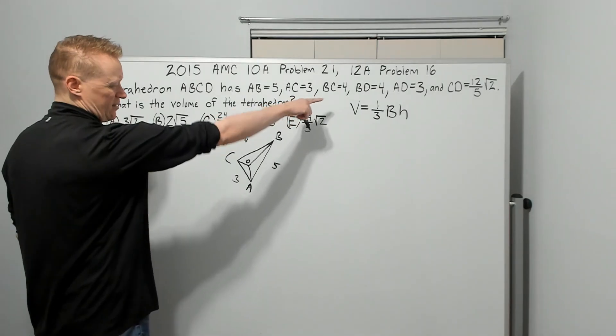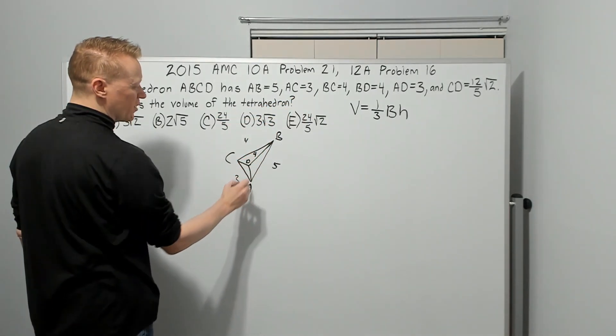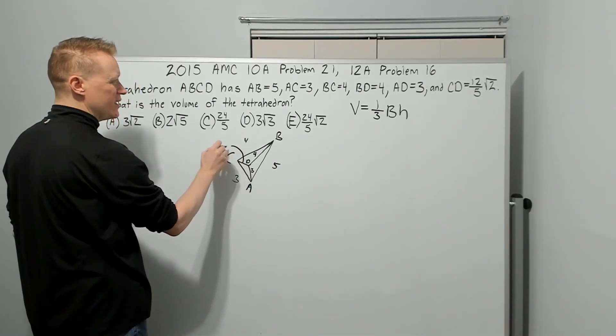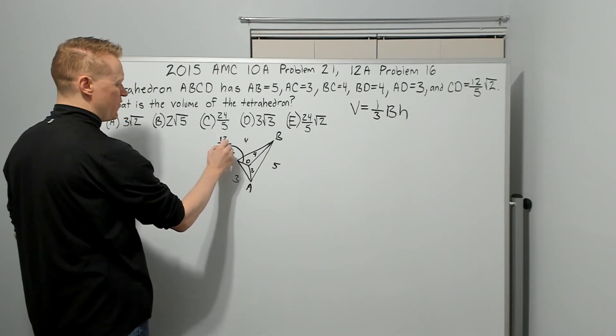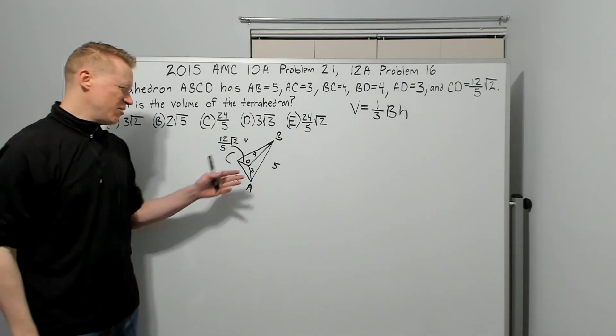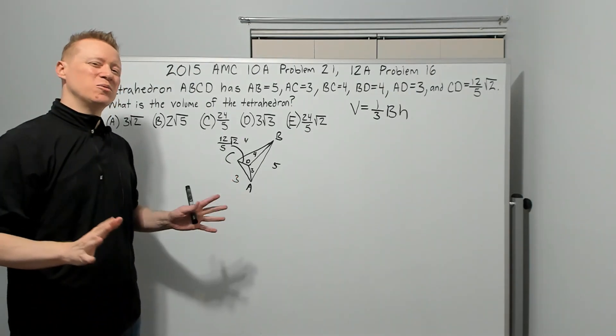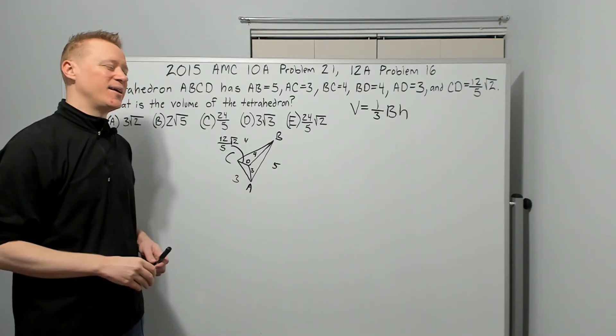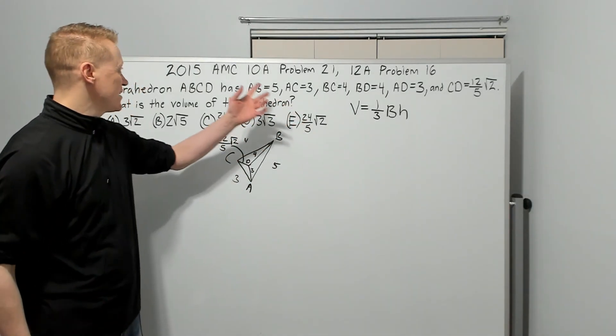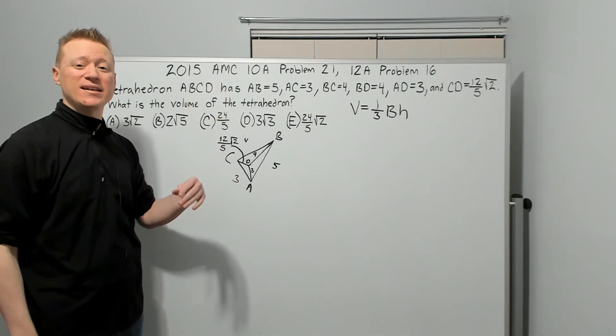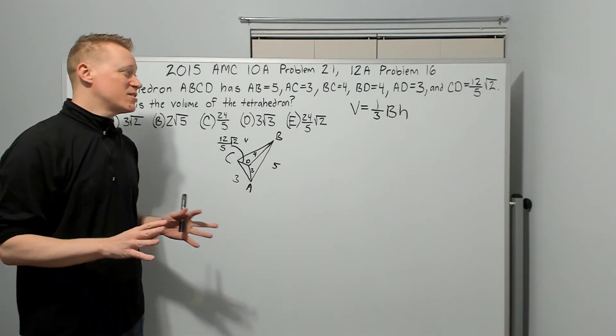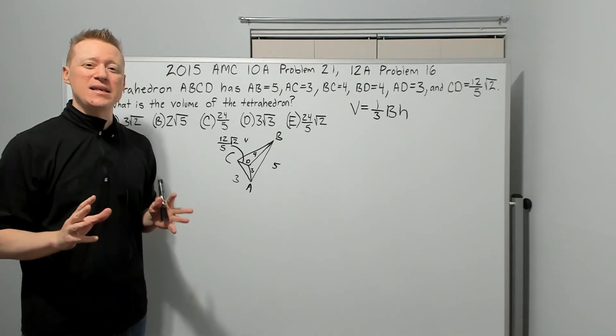Then what? We got another part, D, coming off of the board in a three-dimensional fashion. Maybe up to like right here or so. We don't really know. We're going to come this way. We'll call that D. It does tell us that BD is 4, AD is 3, and this part right here is 12 fifths root 2. At this point in the problem, you don't quite know if you've drawn it correctly. Don't worry about that too much. We need to think conceptually.